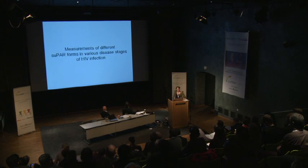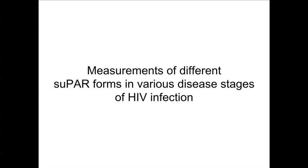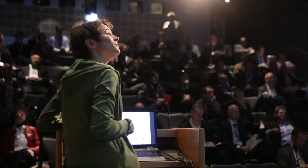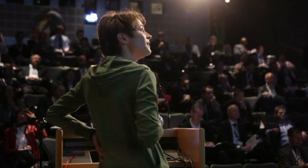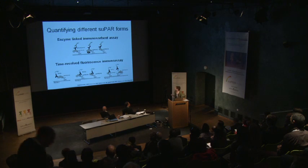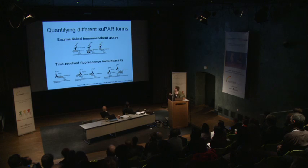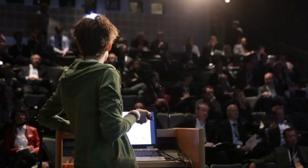To dig a bit deeper into that, we wanted to measure the different SUPAD forms in various disease stages of HIV-infected patients. We used different assays. We used an ELISA assay developed and validated by the FinCEN laboratory. That assay did not differentiate between the full-length receptor, domain 1-2-3, domain 2 and 3, or domain 1 — the full-length receptor linked to different ligands. So I refer to measurements from this assay as bulk SUPAD.